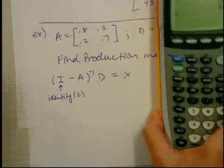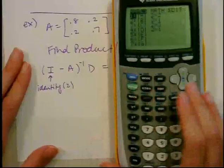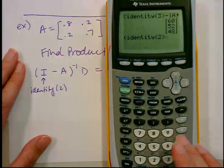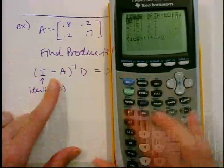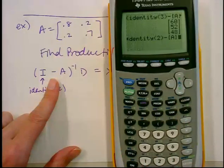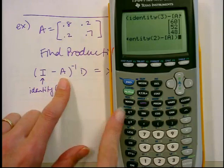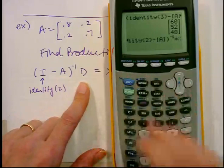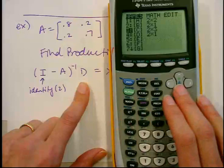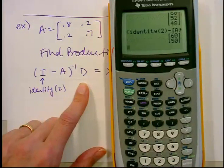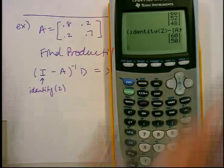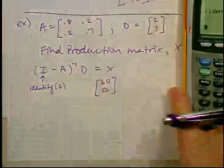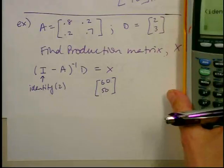Following the formula: parentheses, identity(2) minus matrix A, close parentheses, raise to the negative one, times matrix D. So (identity(2) − A)^(−1) × D. I hit enter and get the production matrix: 60 and 50 — a two by one matrix.